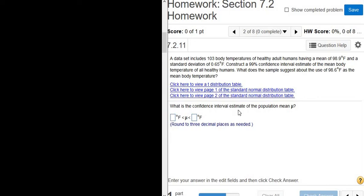In this problem, we have to construct a confidence interval estimate for the population mean mu. As we read the question, we have to figure out whether we use z or t.